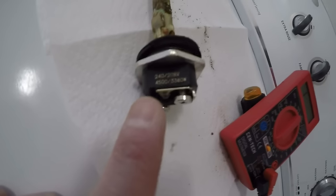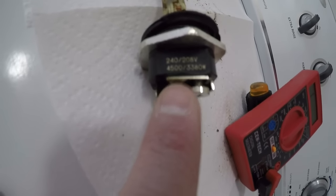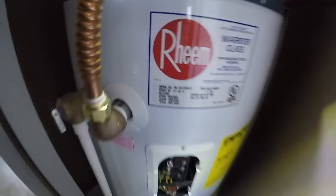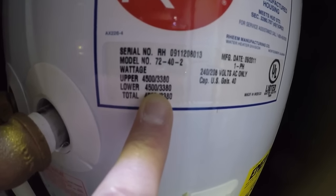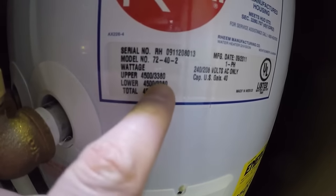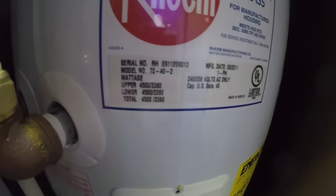When you go to buy a new one, this is a screw-in type and it says 4500 by 3380 there. If you come over to your tank, you'll see on the tank, there's more information there and it tells you the lower, it shows you the numbers, 4500, 3380 and upper, 4500, 3380.